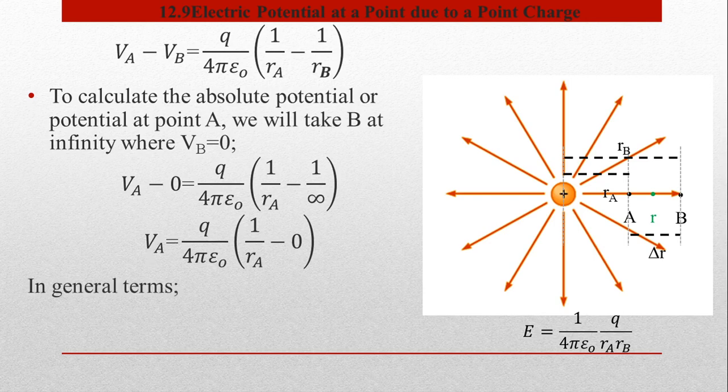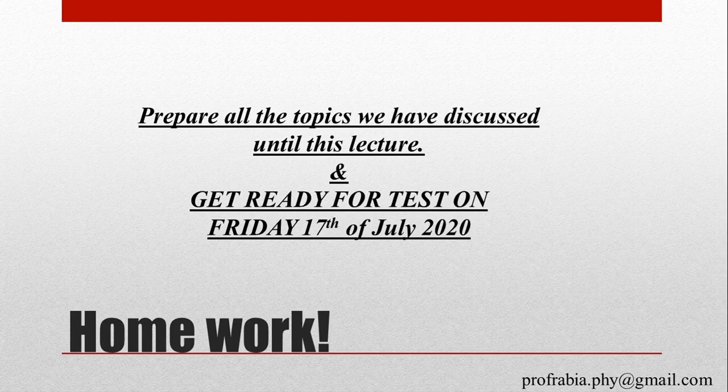اب general terms میں subscript drop کر کے لکھتے ہیں: potential at a point = (1/4πε₀)·(q/r)۔ یہ وہ potential ہے جو ایک point پر ہے due to a point charge۔ یہاں دیکھیں کہ potential 1/r سے vary کر رہا ہے، جبکہ electric field 1/r² سے vary کرتا ہے — یعنی electric field کی variation زیادہ ہے as compared to potential کی variation۔ آج کی derivation یہاں complete ہوتی ہے۔ Homework: آج تک کے تمام topics prepare کریں۔ Test Friday, 17th July 2020 کو ہوگا۔